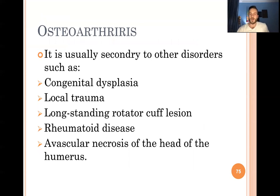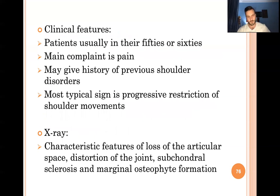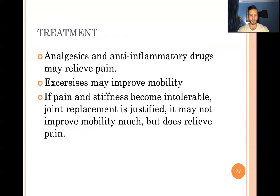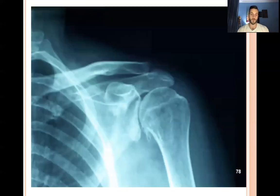Osteoarthritis of the shoulder has many causes: congenital dysplasia, local trauma, long-standing rotator cuff lesions, rheumatoid disease, and AVN of the humeral head. Patients in their 50s–60s present primarily with pain. X-ray shows the classic features: decreased joint space, osteophytes, subchondral sclerosis, and subchondral cyst deformities. Treatment: analgesia and exercise to improve mobility; if pain persists, surgery is indicated.